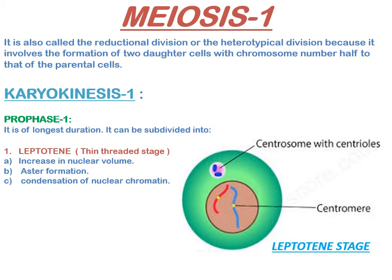In leptotene, there is an increase in volume of the nucleus, formation of asters, and condensation of nuclear chromatin by dehydration and spiralization into a species-specific number of chromosomes — meaning the number of chromosomes varies from species to species. Each chromosome is formed of two sister chromatids but still appears single and long thread-like, and each has a linear series of darkly stained beads called chromomeres.